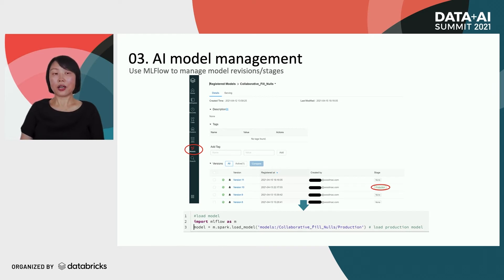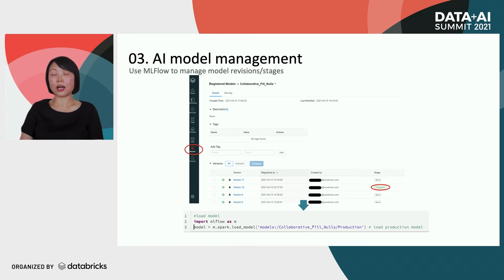In this work, we use MLflow built inside Databricks for model management and version control. If you log into Databricks and go to the model icon in the left menu bar, you can find all the models you have trained, each with different versions. For example, we have 11 versions of a model, and we specified version 10 as our production model. There are other stages like staging, archive, or no stage at all. By selecting the production model version, you can call a simple line of code to load it — making it easy to manage versions and retrieve models for predictions.